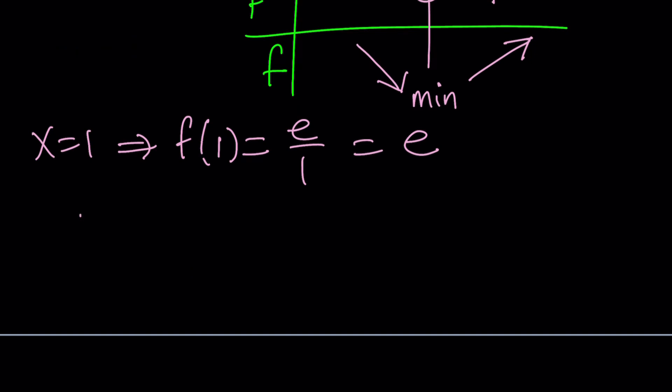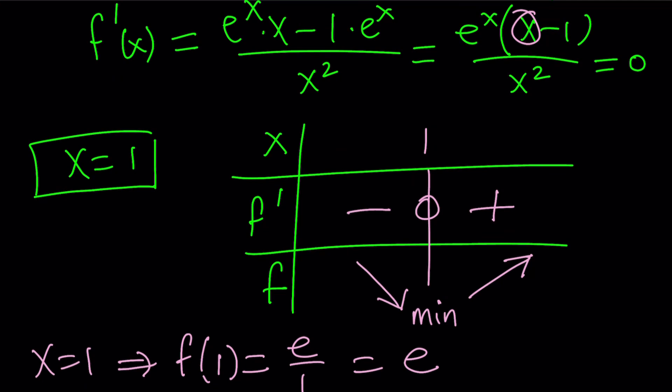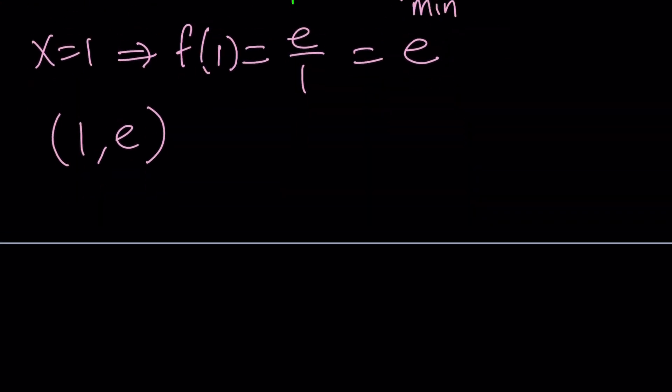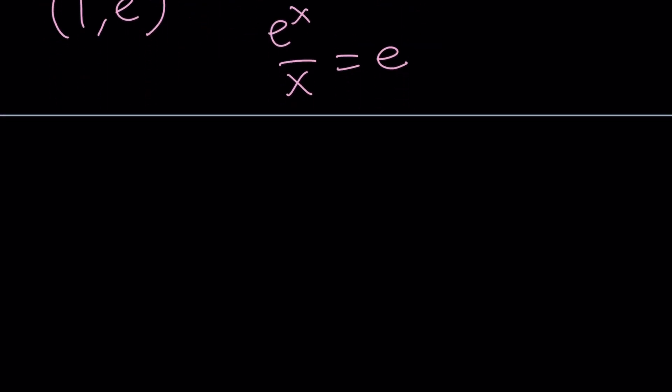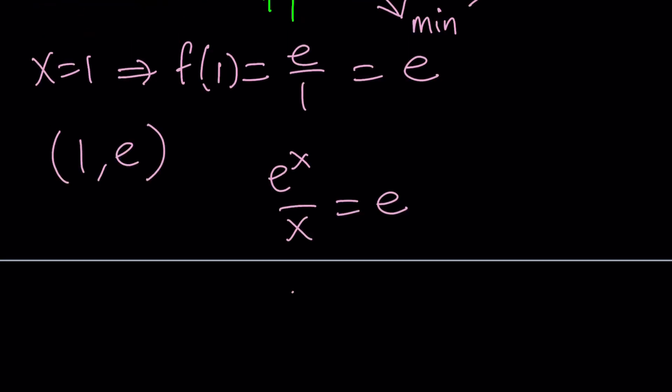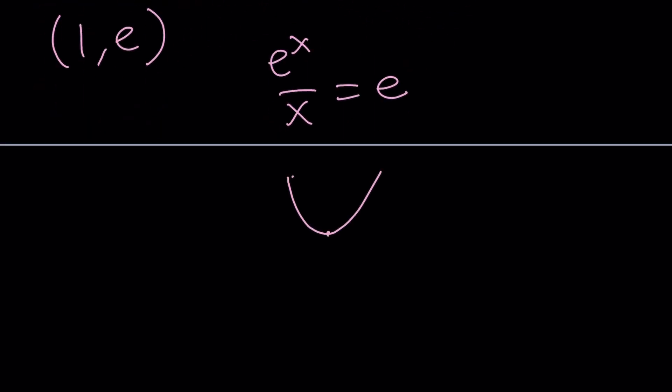So f of 1 is e, or 1 comma e is a point on the graph. What is that supposed to mean though? Well it just means that x equals 1 is a solution because when you replace x with 1 you get e. So remember our equation, e to the x divided by x equals e. As you replace x with 1 you get a solution. Okay, is that the only solution? What is the significance of having this function, the minimum point at x equals 1? Well it just means that we have a horizontal tangent at that point. So we have a graph that decreases and then increases, and we do have a horizontal tangent in between. So do you think that's going to be the only solution? We kind of need to look at the whole graph and definitely there's another way to look at it too.